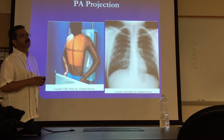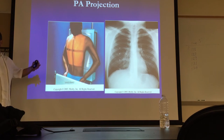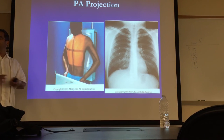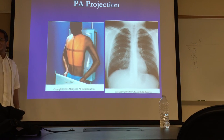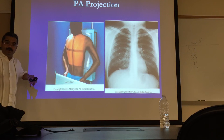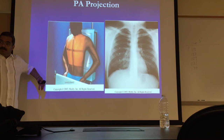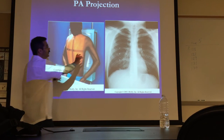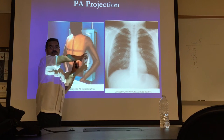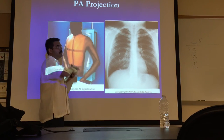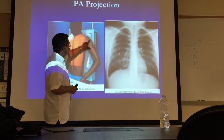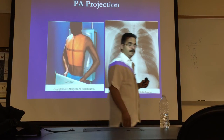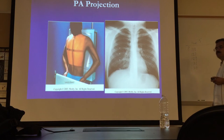If you have a patient that is pretty wide — what is that body habitus called when you have someone that is wide? Hypersthenic. If you have someone that is hypersthenic and is pretty wide, then what you do is you turn the image receptor to be crosswise instead of leaving it lengthwise. It's still a 14 by 17, but crosswise — so it would be horizontal.